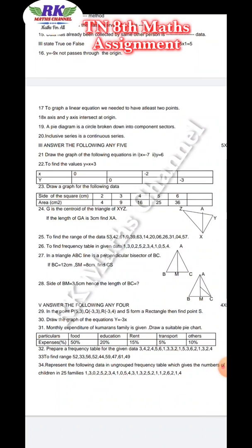Prepare a frequency table for the given data. To find the range. Question number 34 - represent the following data in ungrouped frequency table, which gives the number of children in 25 families. This is ungrouped data, so draw the table for the given data.